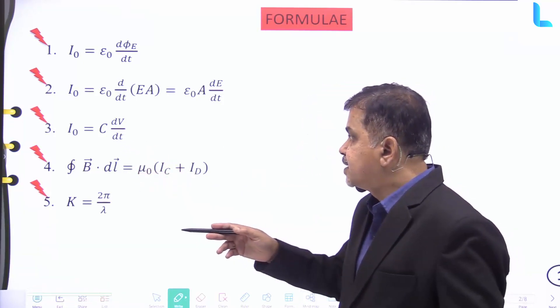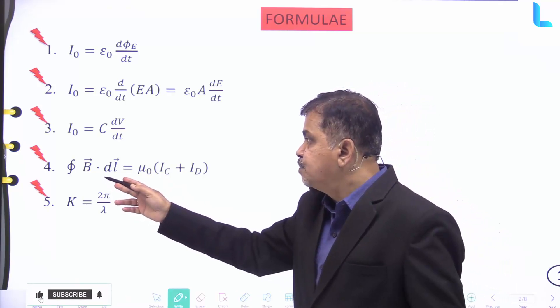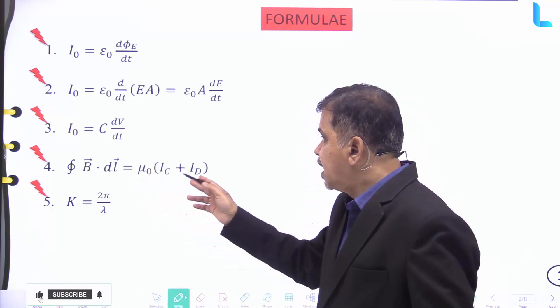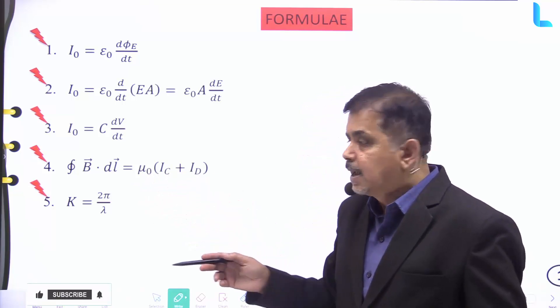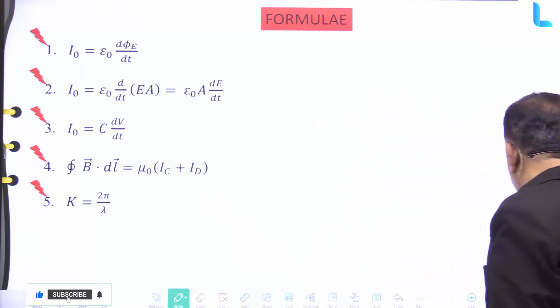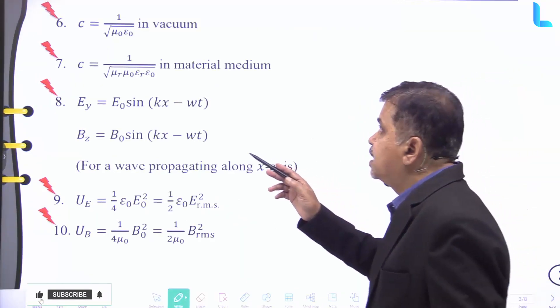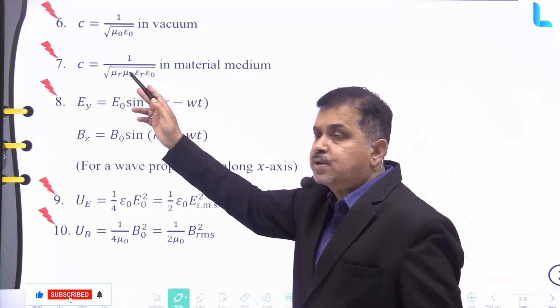Further we have ∮B·dl in the vector form equal to μ₀ into (ic plus id). And K equal to 2π by λ, and c equal to 1 divided by square root of μ₀ into ε₀ in vacuum.